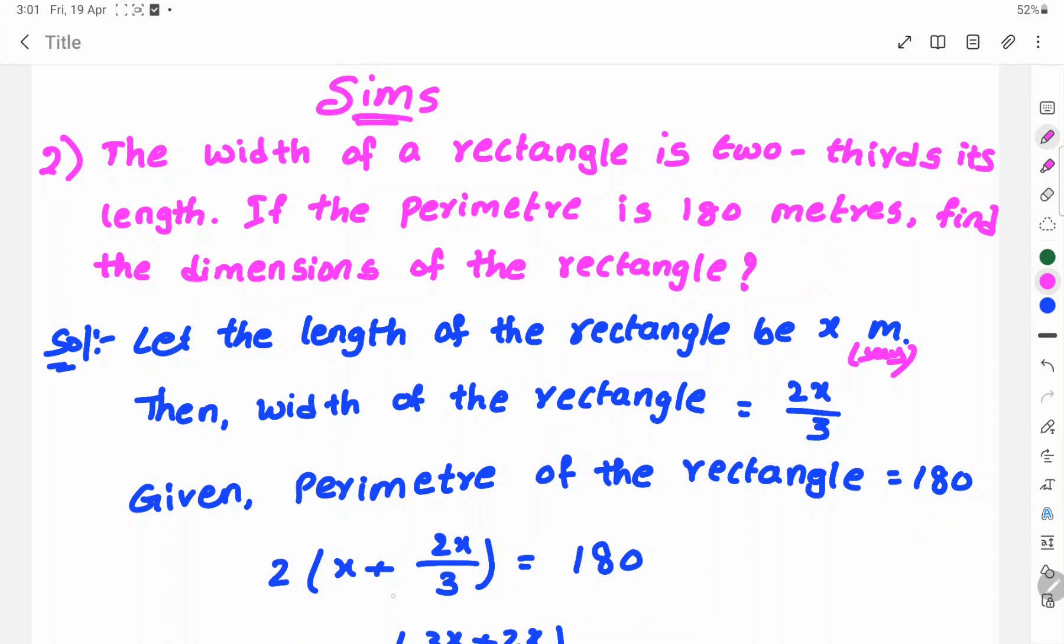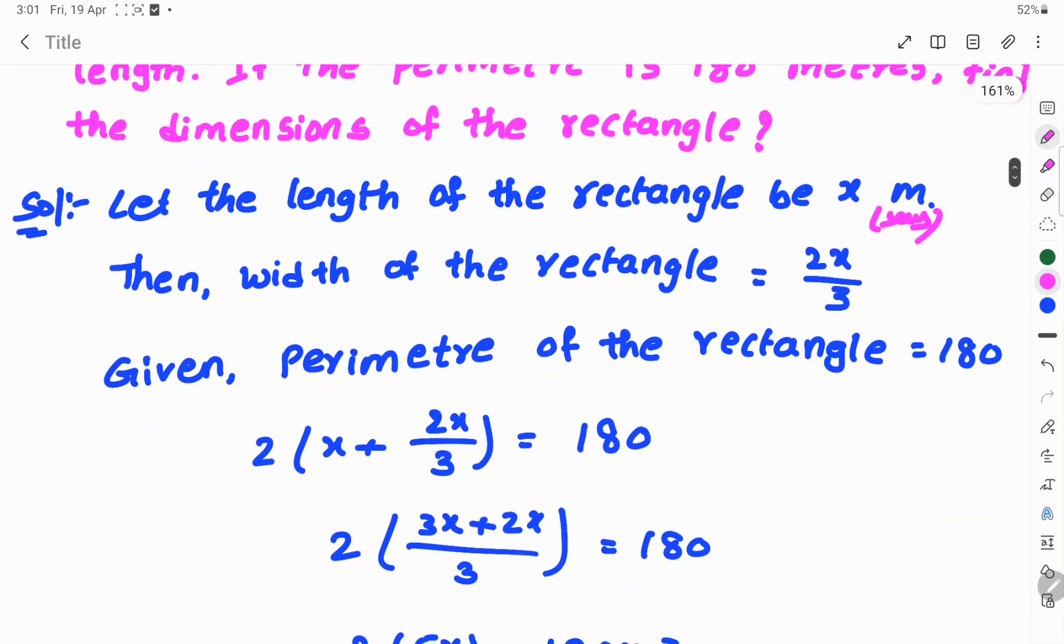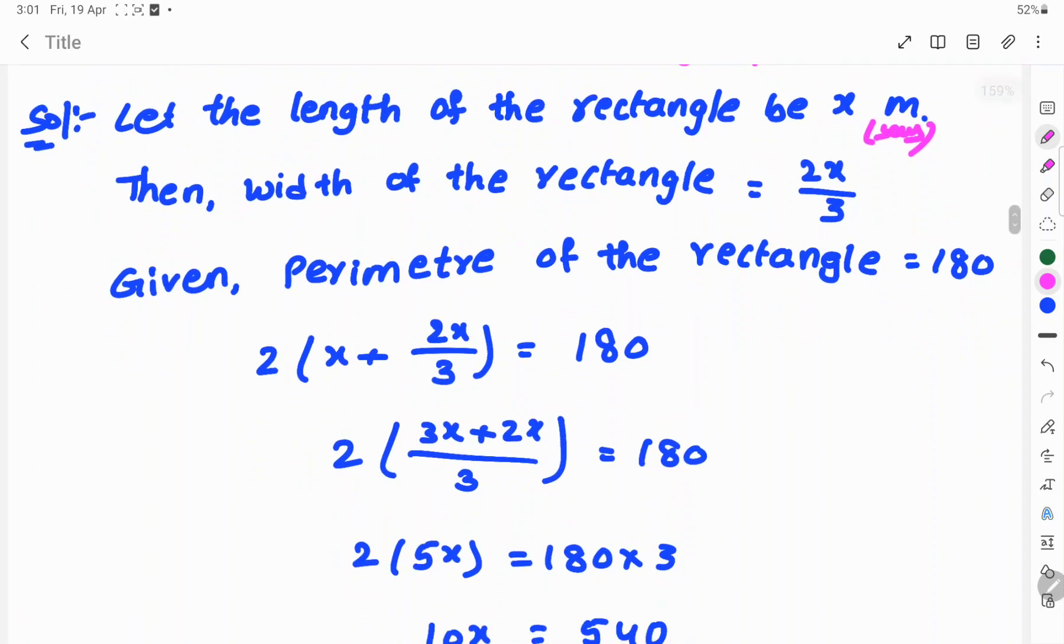So, 2 into x plus 2x by 3 equals 180. Here we find out, 3 into x, 3x plus 3. 3 cancels one time, 1 into 2x is 2x is equal to 180.